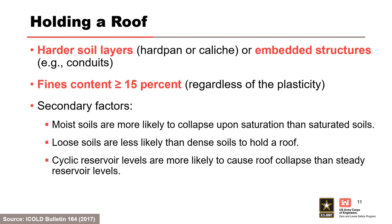For holding a roof, two primary factors are the presence of a continuous harder soil layer or embedded structure, and the fines content being greater than or equal to 15%, regardless of the plasticity of the fines. Non-plastic silts, sands, and gravels will generally not hold a roof since the roof collapses upon saturation. Partially saturated and high fines content non-plastic soils may hold a roof near the phreatic surface, but the roof is sustained by pore pressure suction and may collapse upon saturation. Secondary factors include: moist soils are more likely to collapse upon saturation than saturated soils; loose soils are less likely to hold a roof than dense soils; and cyclic reservoir levels are more likely to cause roof collapse than steady reservoir levels.